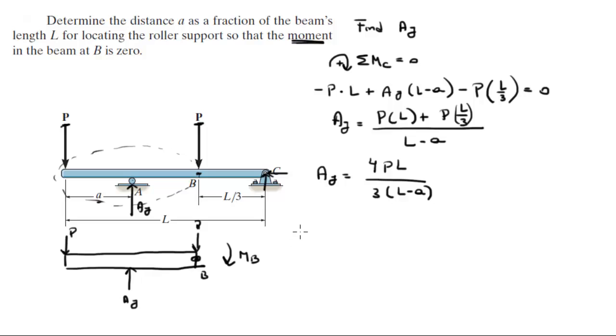So now we know that going clockwise, sum of the moments at B is equal to zero, so you know that AY times 2/3 L minus A—that's the distance from B to A, is 2/3 of L minus the distance A—so that's the moment created by AY